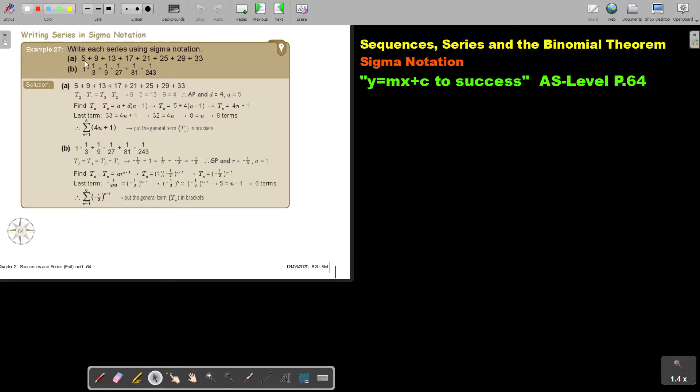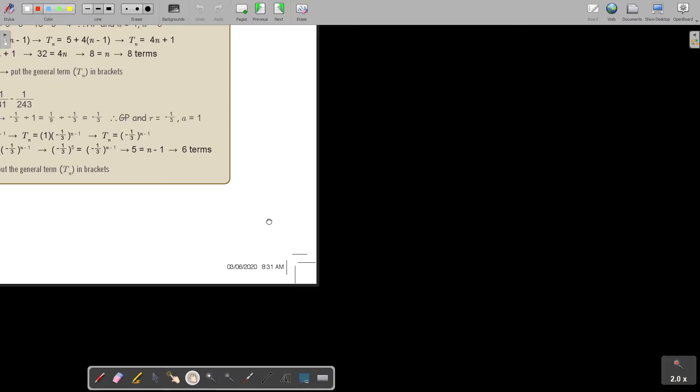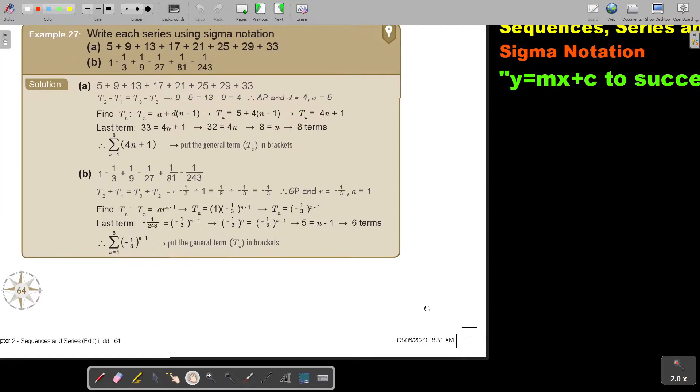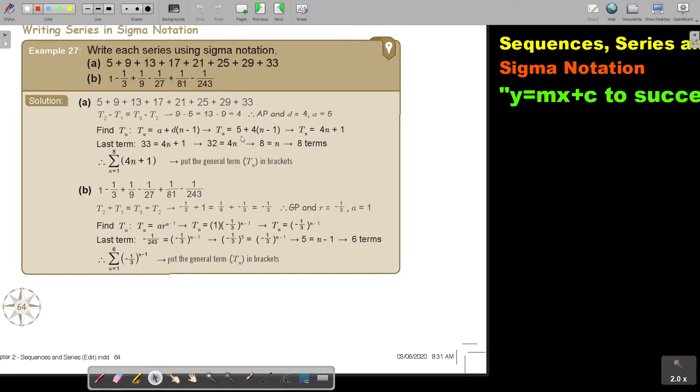Now, if you look at this one, you can say they are adding 4 every time. So it's AP. I first determine that it's AP. The value of A is 5 and the common difference is 4. Then I use the TN formula. What is the TN formula? It's A plus D bracket N minus 1. Then I substitute. In the place of A, I put 5. I put 4 and I just simplify. And that I'm going to write there.